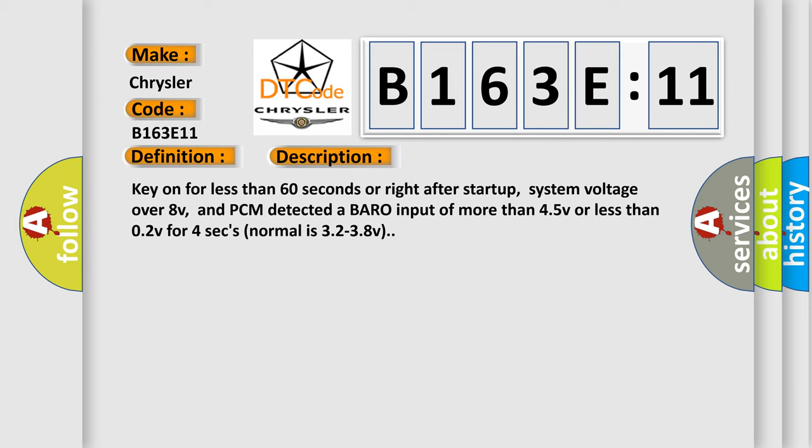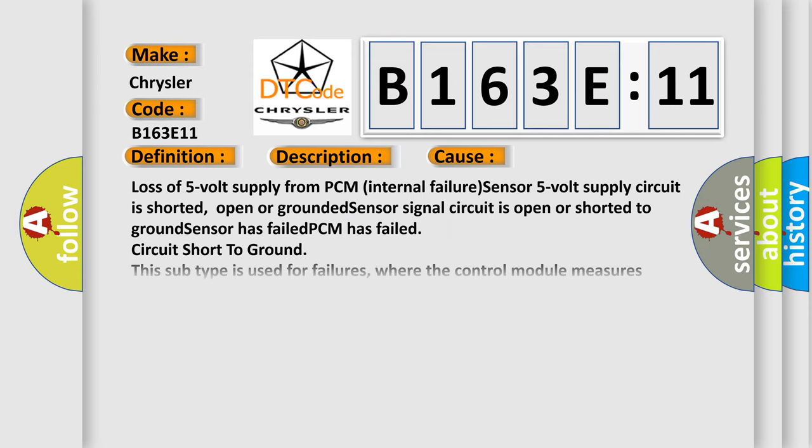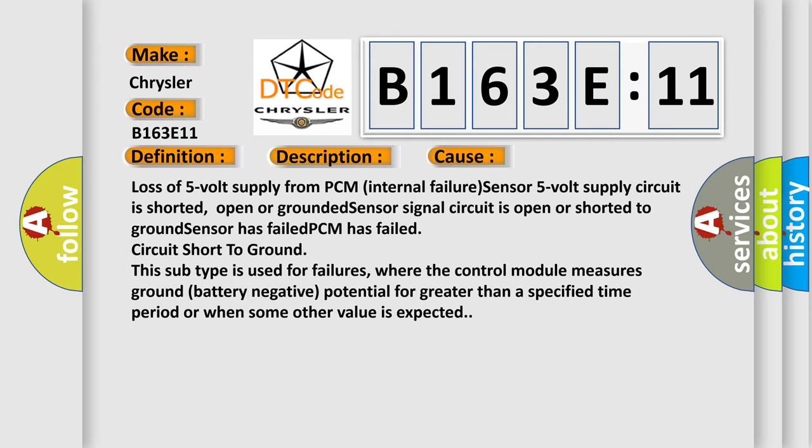This diagnostic error occurs most often in these cases: Loss of 5V supply from PCM internal failure, sensor 5V supply circuit is shorted, open or grounded, sensor signal circuit is open or shorted to ground, sensor has failed, PCM has failed. Circuit short to ground. This subtype is used for failures where the control module measures ground battery negative potential for greater than a specified time period or when some other value is expected.